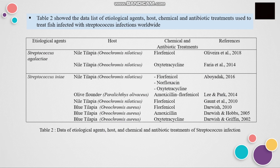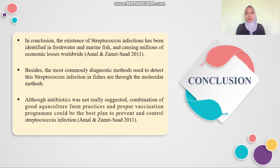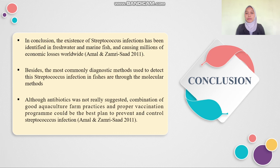This table shows the data list of etiological agents, host, chemical, and antibiotic treatments used to treat fish infected with Streptococcus infections worldwide. This table also shows the data list of etiological agents, host, and vaccine treatments used to control and treat fish infected with Streptococcus infections worldwide. For the conclusion, Streptococcus infections have been identified in freshwater and marine fish, causing millions in economic losses worldwide. The most commonly used diagnostic method is molecular methods. Although antibiotics are not strongly recommended, a combination of good aquaculture farm practices and a proper vaccination program could be the best plan to prevent and control Streptococcus infection.